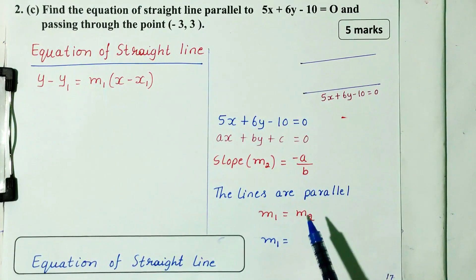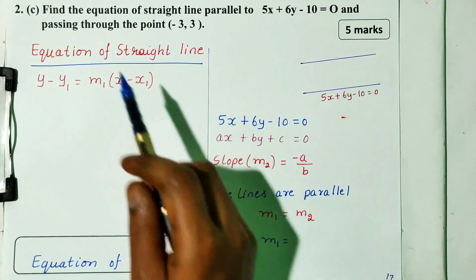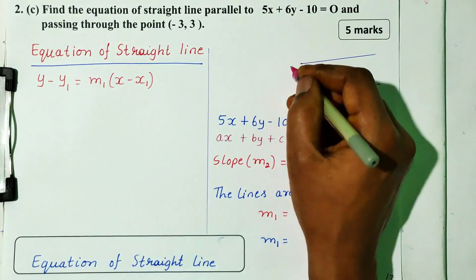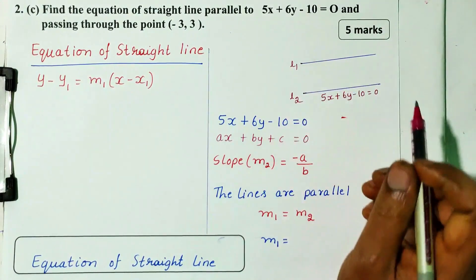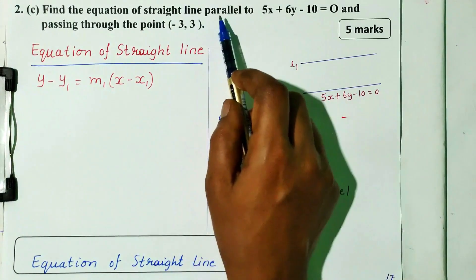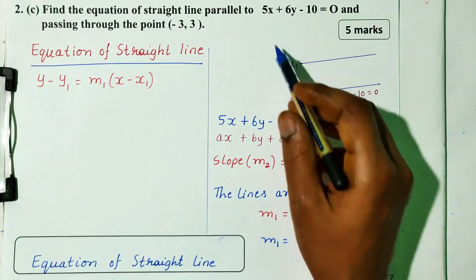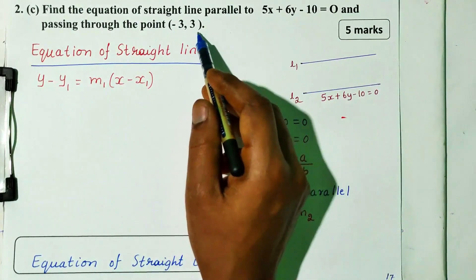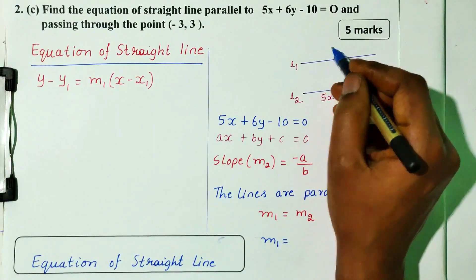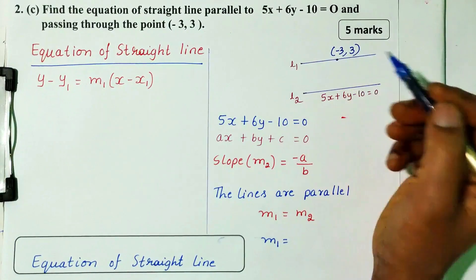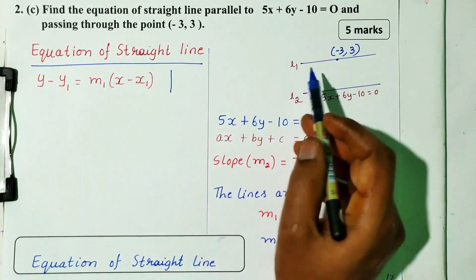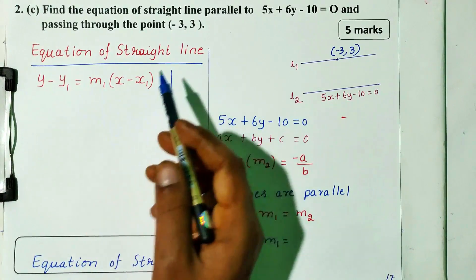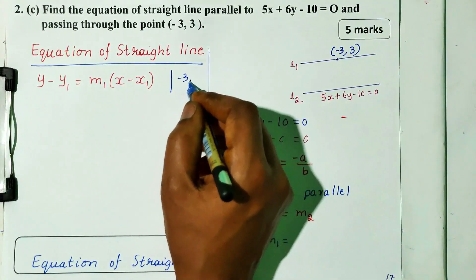So, find the equation of straight line parallel to 5x plus 6y minus 10 is equal to 0 and passing through the point minus 3 comma 3. The first line passes through the point minus 3 comma 3.